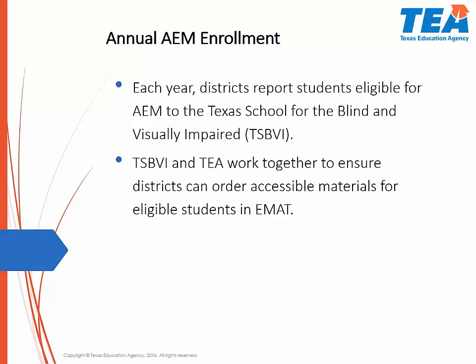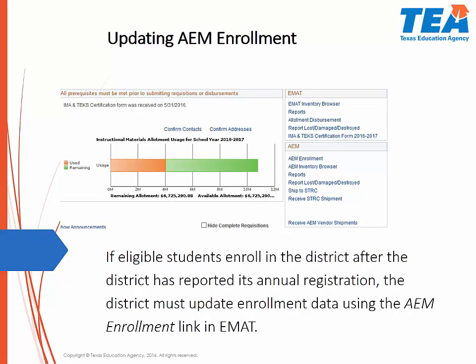Every year, superintendents report the number of students in their district who are eligible for accessible instructional materials to the Texas School for the Blind and Visually Impaired. TSBVI and TEA work to make sure that districts will be able to order those materials in EMAT. When EMAT closes in the spring, the number of students in each grade level is automatically rolled up to the next grade. Sometimes the enrollment for the district may be off for a variety of reasons. Students often enroll in the district after the annual enrollment in February, and the district must then update their enrollment. This is done by going to the district start page in EMAT and clicking on the AEM Enrollment link in the AEM box.